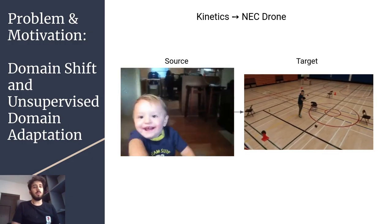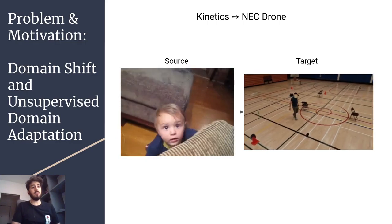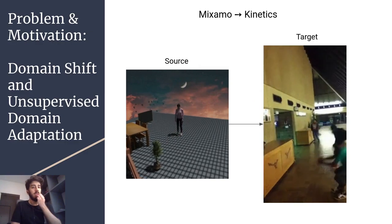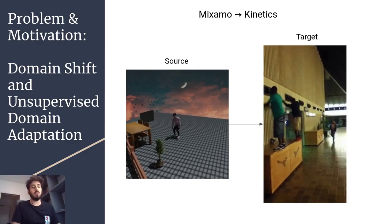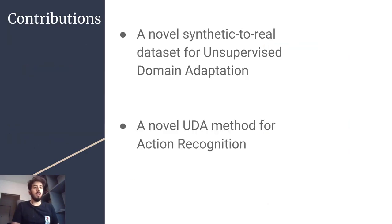Here are some examples of domain shift. First we have kinetics to Nectron, where the domain shift consists of having a drone record the actions, and Mixamo to kinetics, which is our novel dataset, where the domain shift consists of going from the synthetic domain to the real domain. Our work has two main contributions. The first one is a novel dataset to help fuel research in this area, and the second is a novel method for unsupervised domain adaptation.